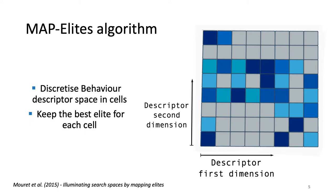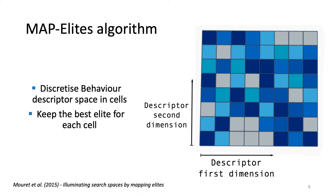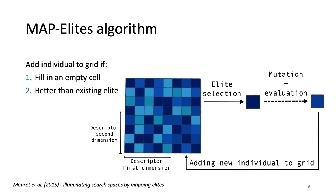Generation after generation, the cells of the algorithm will be filled with more and more qualitative solutions, slowly converging to the final population that will be returned as the output of the algorithm. The overall algorithm can be summarized as follows: at each generation, an elite is selected from the grid, mutated, and evaluated to give a new individual that would be added back to the grid.